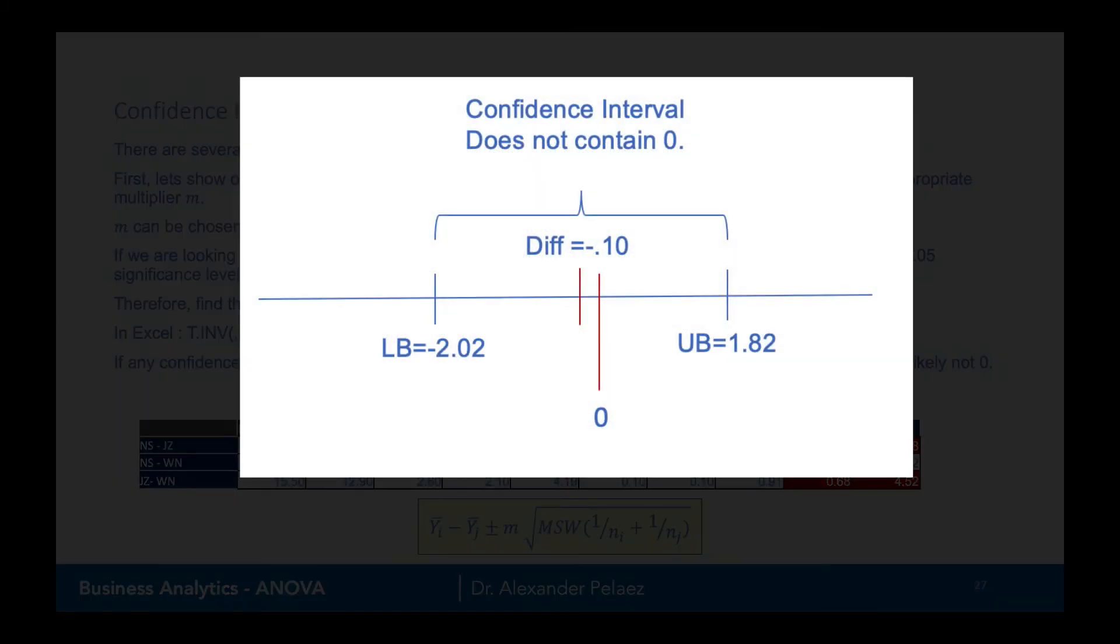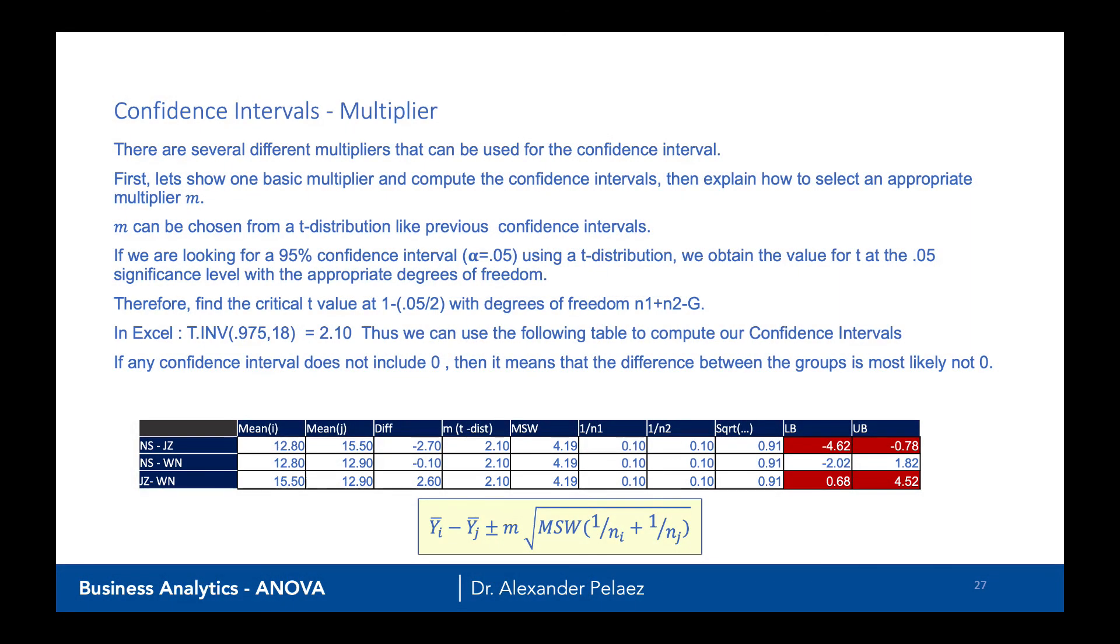If however, the lower bound and upper bound does span zero, meaning one is positive and one is negative, then it means that there is a good chance that the difference is truly zero. Good enough that we can say that statistically there's no difference between the groups.